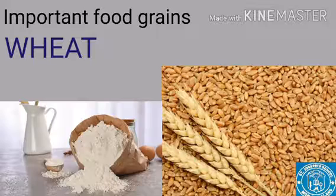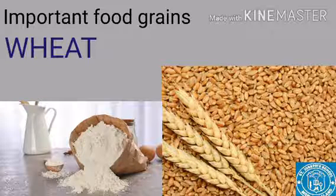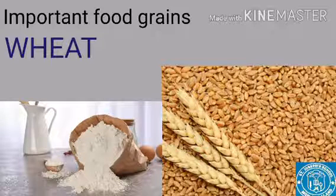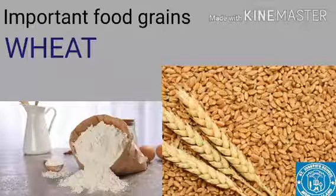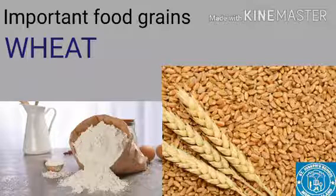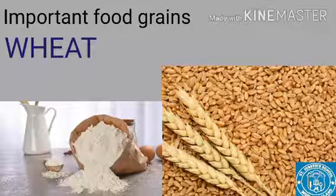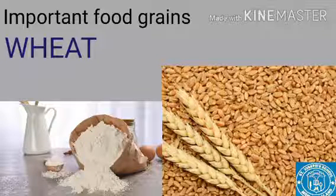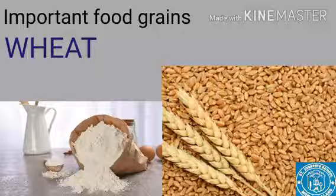Now let's discuss the important food grains of India. First is wheat. Wheat is a Rabi crop and the second most important cereal crop. It is used to make atta, maida, parathas, puris, cakes, and other dishes. Wheat is majorly grown in Punjab, Haryana, Uttar Pradesh, Uttarakhand, Bihar, Rajasthan, and parts of Madhya Pradesh. It requires cool weather for growth, warm weather for ripening, and 50 to 75 centimeters of annual rainfall.